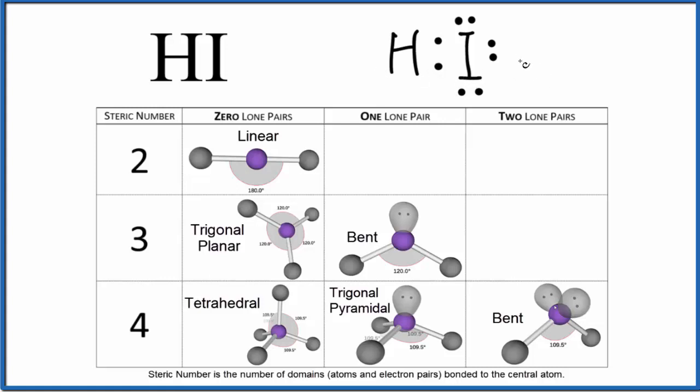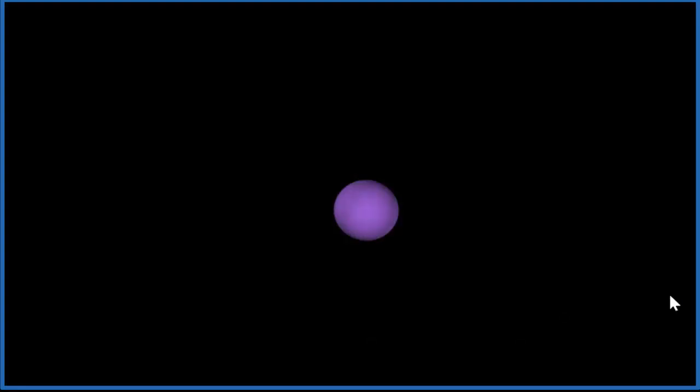Let's look at that in three dimensions. So imagine the purple, that's the iodine atom, and then we add a hydrogen atom to that, single bonded. The only molecular geometry that we're going to have here is linear, it's going to be a straight line.